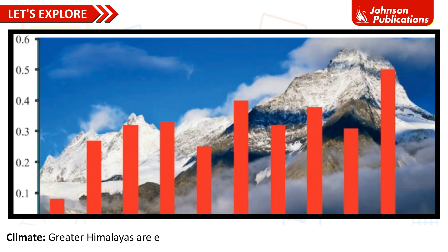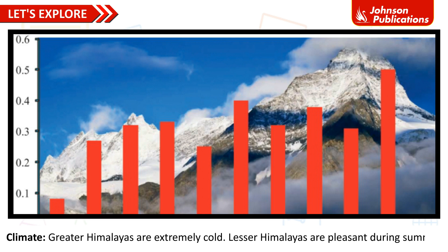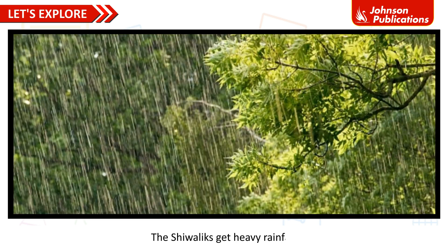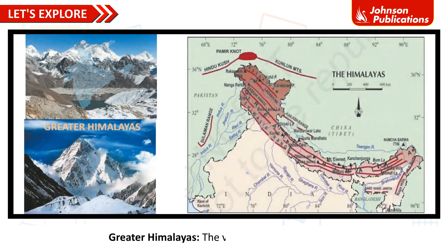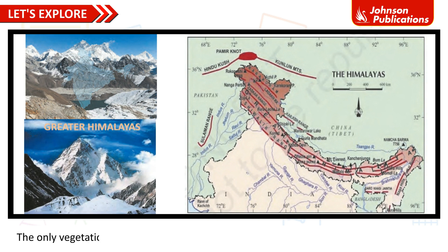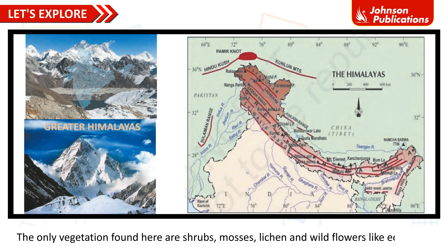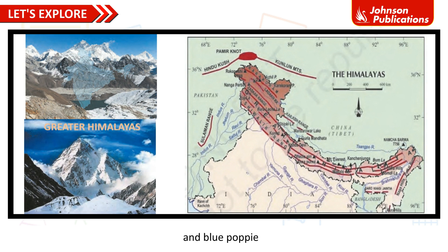The Greater Himalayas are extremely cold. The Lesser Himalayas are pleasant during summer, and the Shivalik gets heavy rainfall. The vegetation of the Himalayas varies with altitude. In the Greater Himalayas, vegetation is sparse — only shrubs, mosses, lichen, and wild flowers like edelweiss and blue poppies are found.